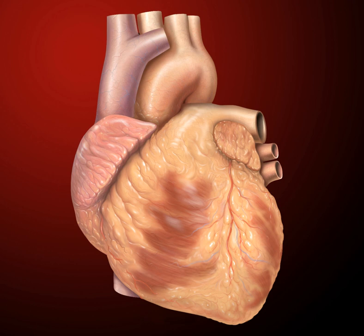Commonly the right atrium and ventricle are referred together as the right heart and their left counterparts as the left heart. Fish, in contrast, have two chambers, an atrium and a ventricle, while reptiles have three chambers.